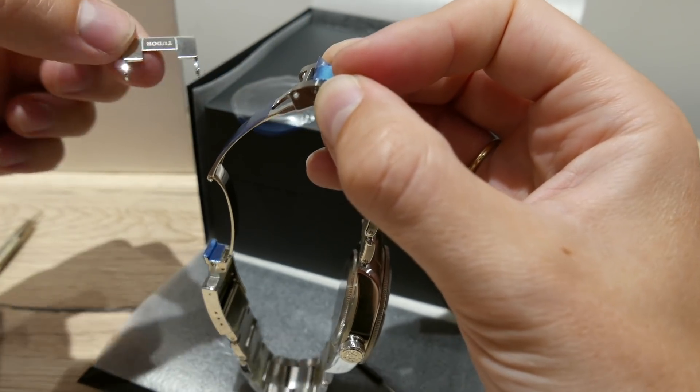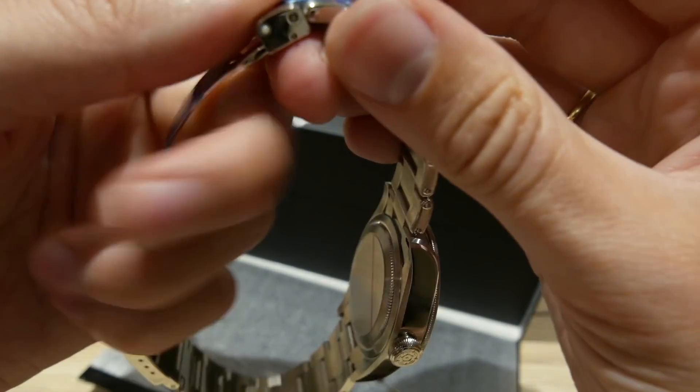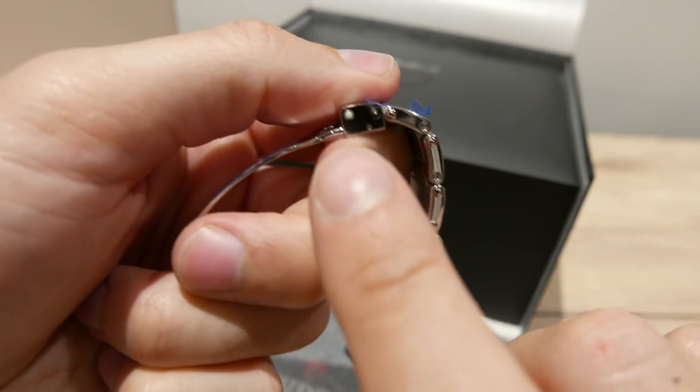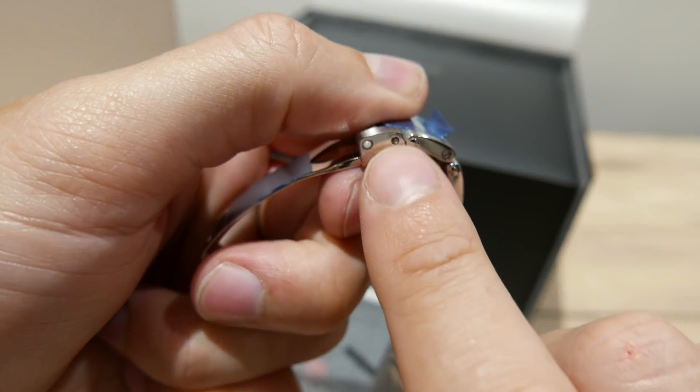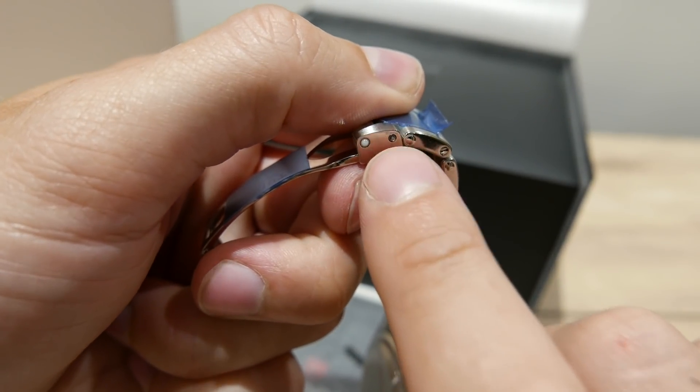So don't worry, that's fine. That's normal. I know this all looks very technical. Now we have a little spring bar in here. That is what was holding the flip lock in place.